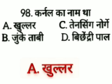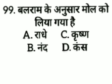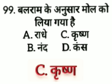The next question: Balram ke anusar mol ko liya gaya hai — option A: rade, option B: nand, option C: krishn, option D: kams. The answer is option C, krishn. Balram ke anusar krishn ko mol liya gaya hai.